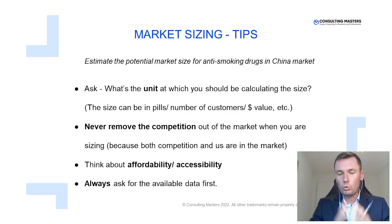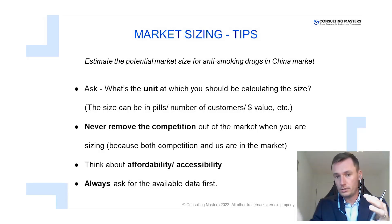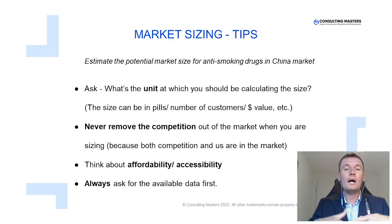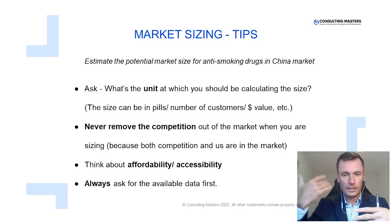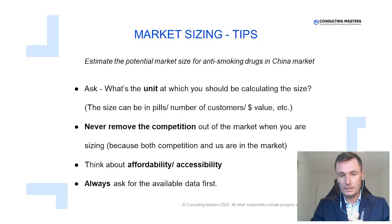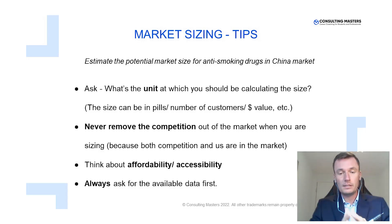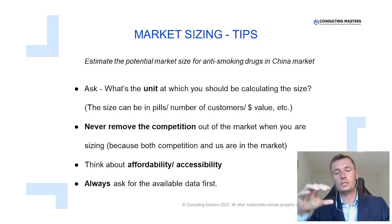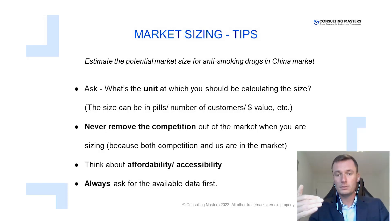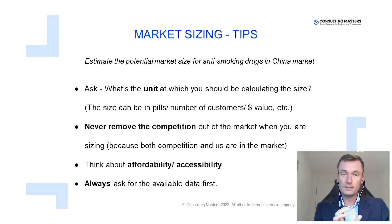To give you brief examples: affordability means how many people can really afford this pill, how many are willing to quit smoking, and how many are actually willing to pay a certain amount of money for it. Accessibility is also pretty important, especially given that this is a prescription-based pill which also has a patent.